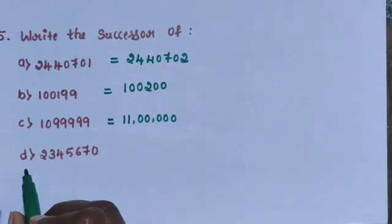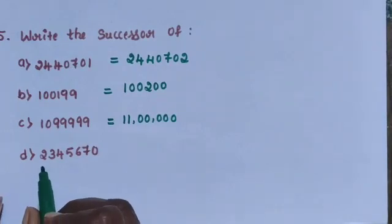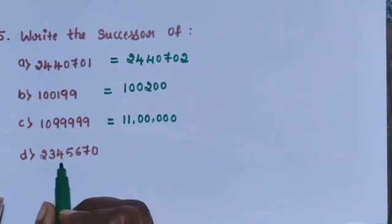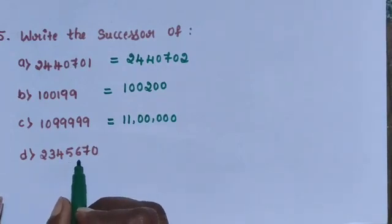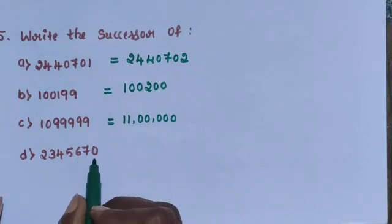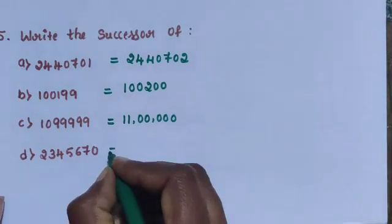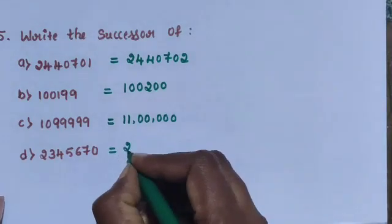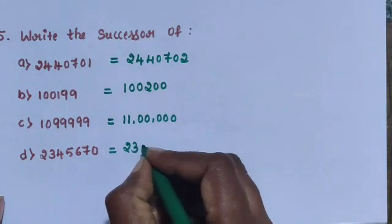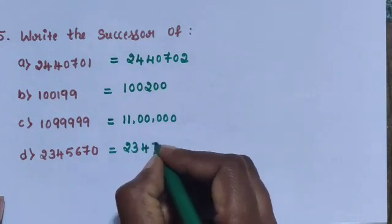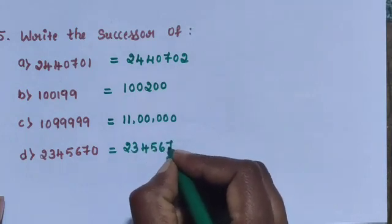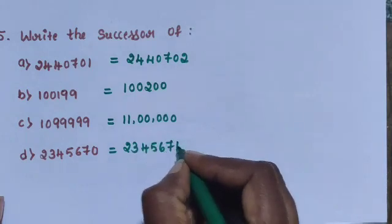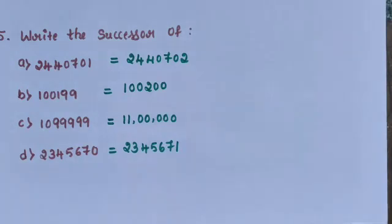Sub-question D: 23,45,670. The successor number is 23,45,671.